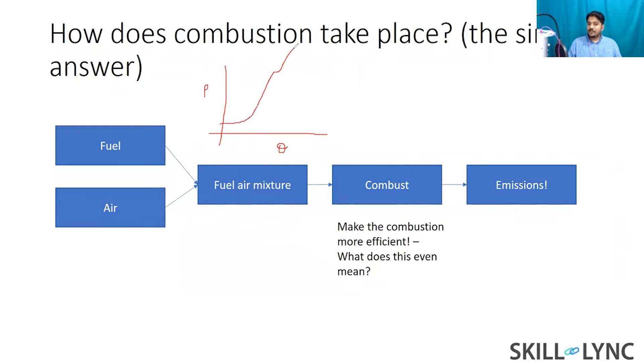So for example, if this is theta your crank angle and if this is pressure, if you take a look at a diesel engine then the pressure curve is going to look something like this. So this is what you call as a p-theta diagram. You might have heard of it. When people are designing an engine this is something that they look at because the area under this curve gives you the power output.